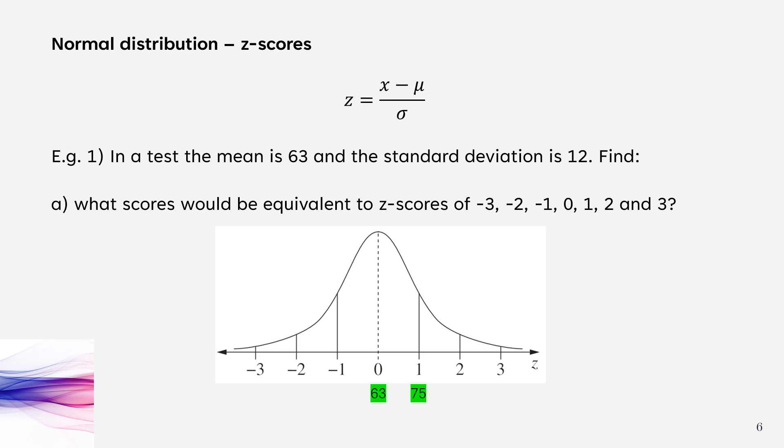With a standard deviation of 12, that means that a z-score of 1 is adding 12 onto our mean. So 63 and 12 gets us 75.